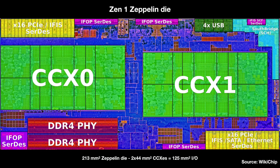Some of the unmarked blue stuff in the middle is the scalable data fabric that connects the CCXs, the memory controllers, the PCIe, etc. When AMD puts eight cores on a chiplet, that's two separate CCXs, meaning two separate L3 caches. This causes some performance irregularities. If an app is running within one CCX, it will only have access to some of the cache, not all of it. And if an app is spread across multiple CCXs, it causes cross-CCX communication, which is much slower.